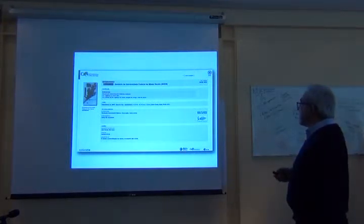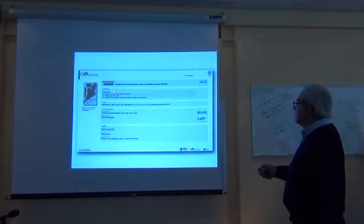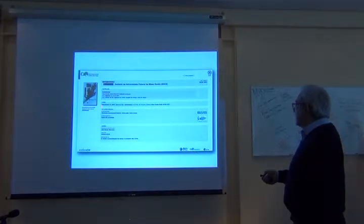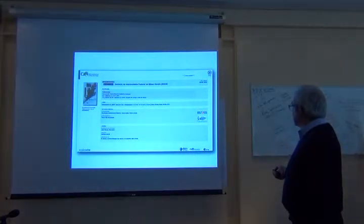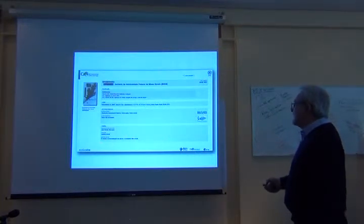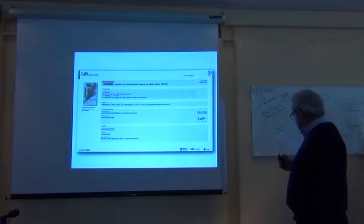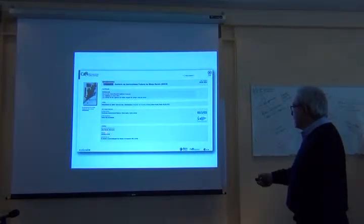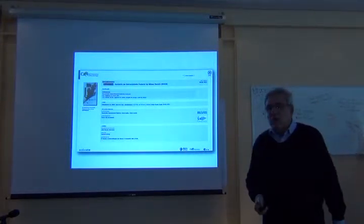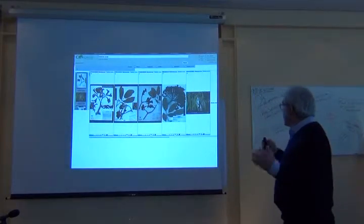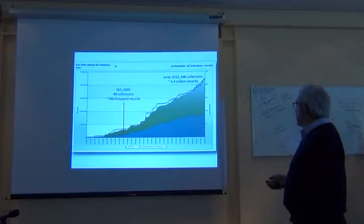This is the species card, where for each species available in the system we have a mechanism to build up a species card. You have taxonomic information, collection data, and information integrated from other systems such as the list of Brazilian species and Flora Brasiliensis. We give full credit to the information provider — you can see the collection, who is responsible, how to cite it, and the restrictions of use.